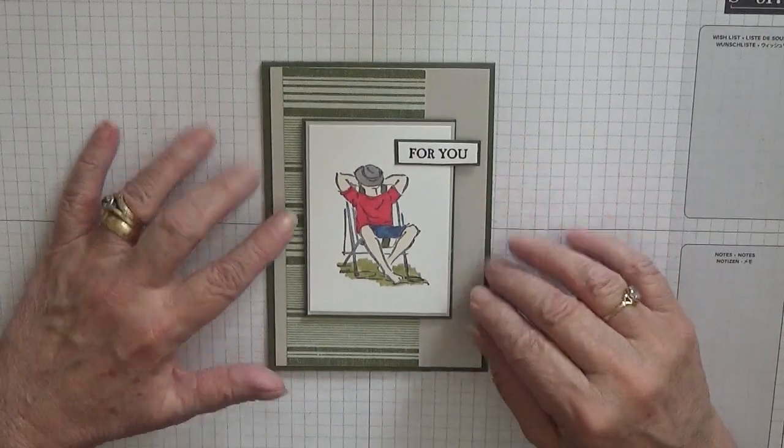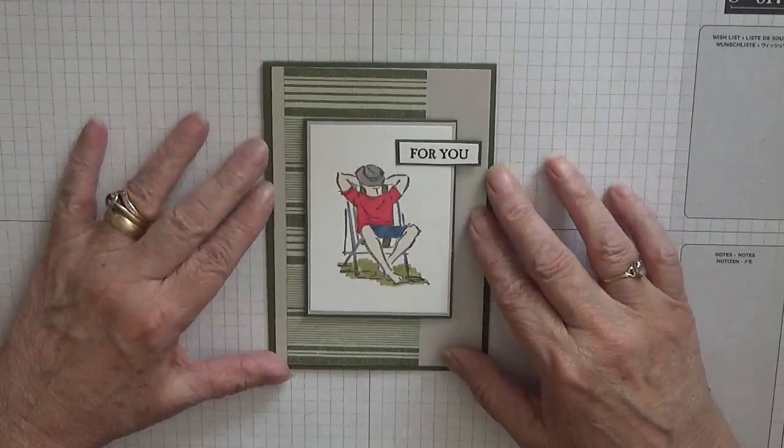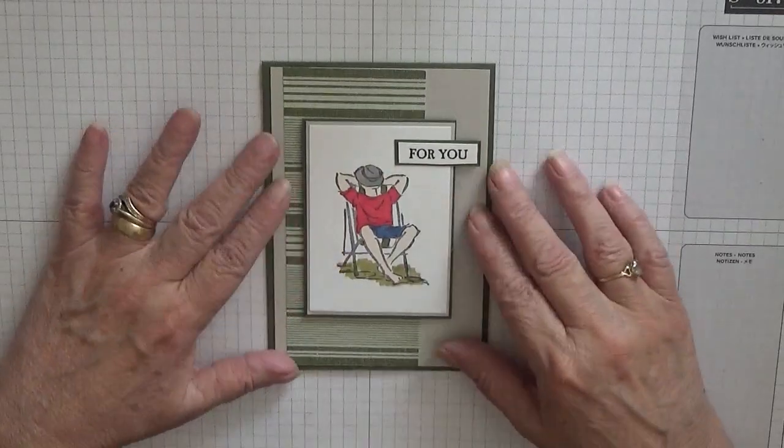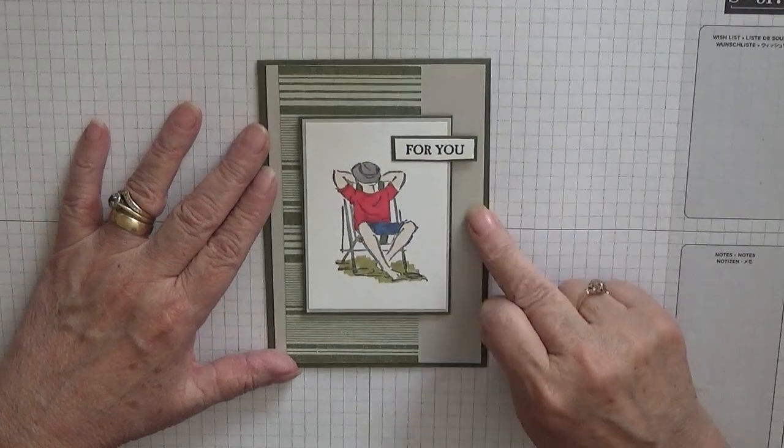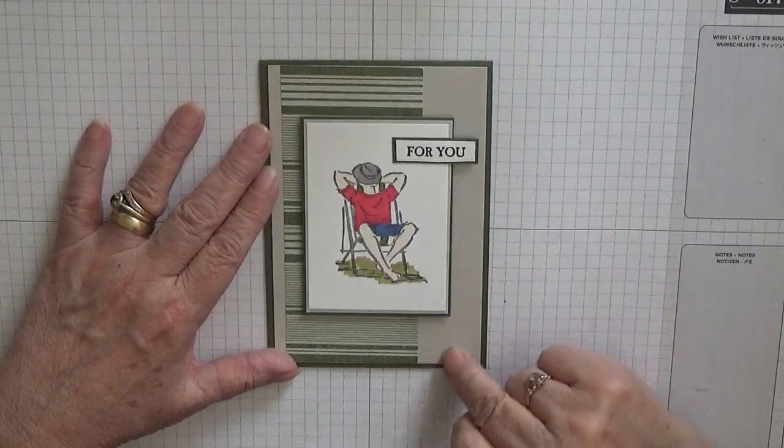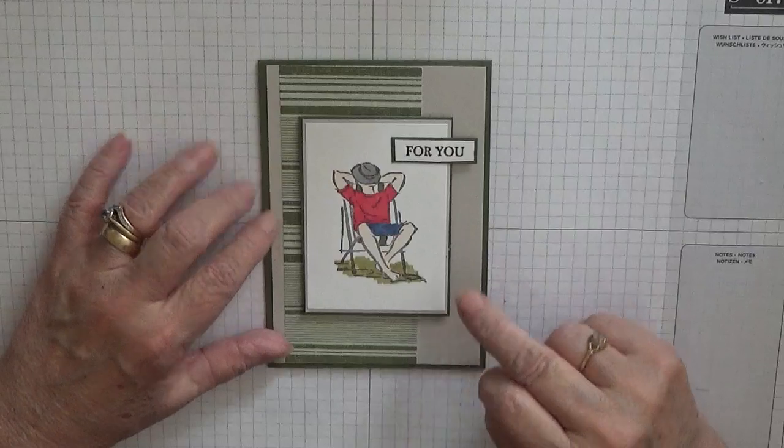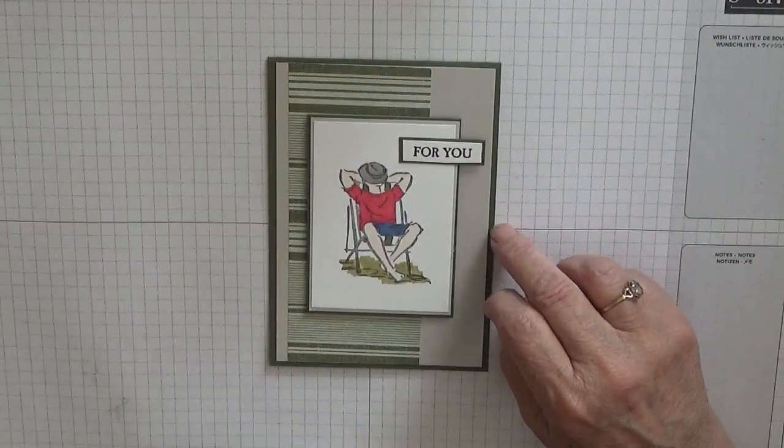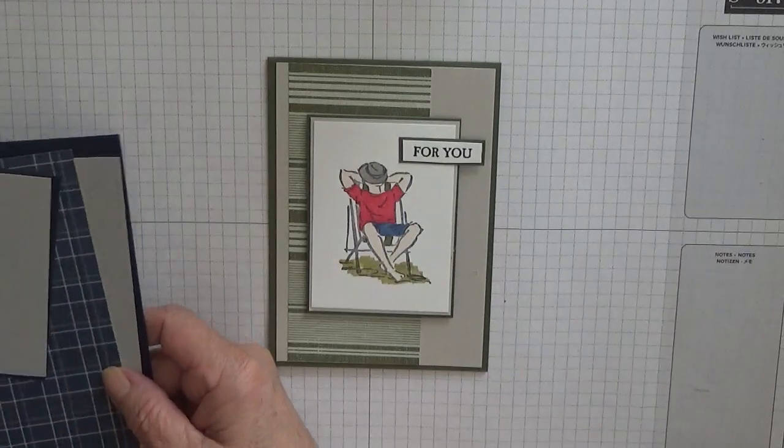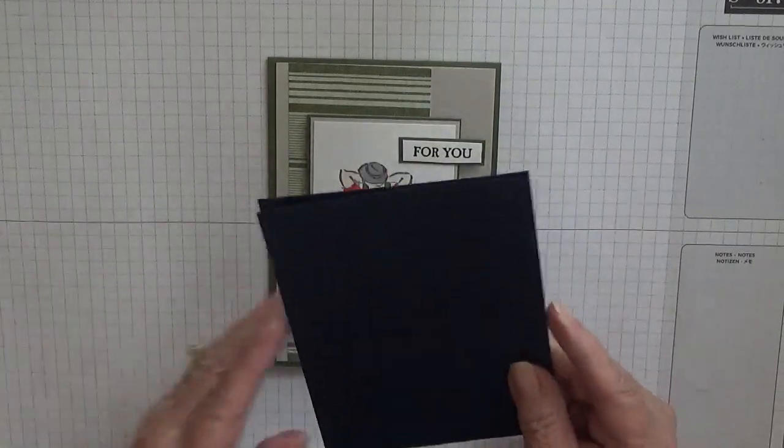Hello, Georgia Burns here. Today I'd like to show you how I made this card, or a card similar to this. I've actually run out of Mossy Meadow and Sahara Sand, so I'm going to change it to Knight of Navy.